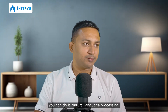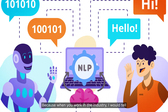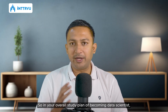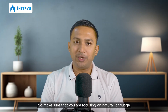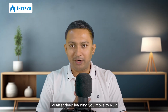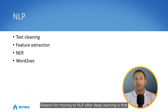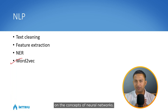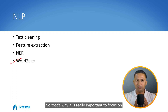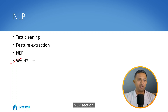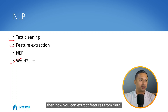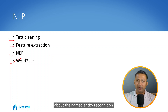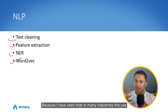After deep learning, the next step is natural language processing. In most companies right now, text data is being generated in large volumes, so you cannot ignore NLP in your data science study plan. The reason to move to NLP after deep learning is that models like Word2Vec and FastText are built on neural network concepts. In NLP, go through text cleaning approaches, feature extraction methods like Count Vectorizer and TF-IDF Vectorizer, and word embeddings.